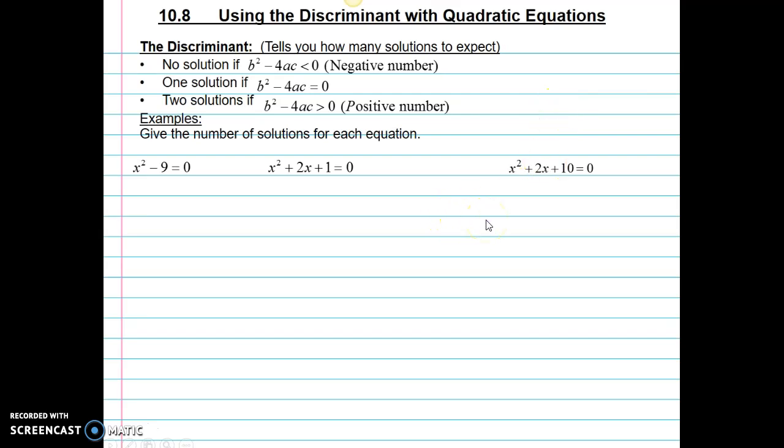So let's look at these three examples. So the first thing I want to do is identify a, b, and c, just like I do when I'm using the quadratic formula. Write down my discriminant, b squared minus 4ac. Substitute the values for b, a, and c. Simplify. Now, since this is a positive number, that equation would have two solutions.